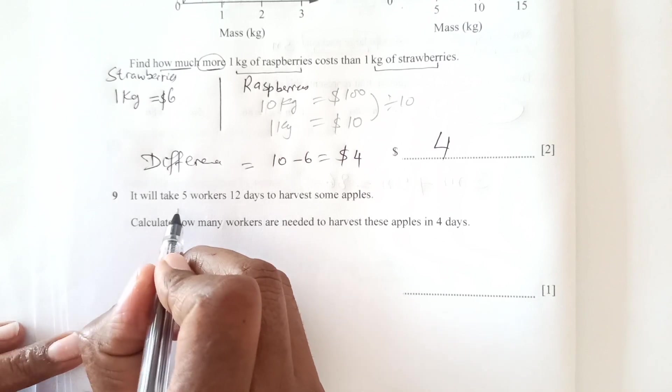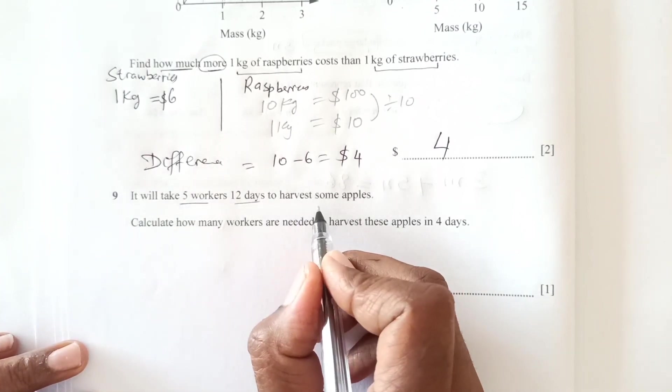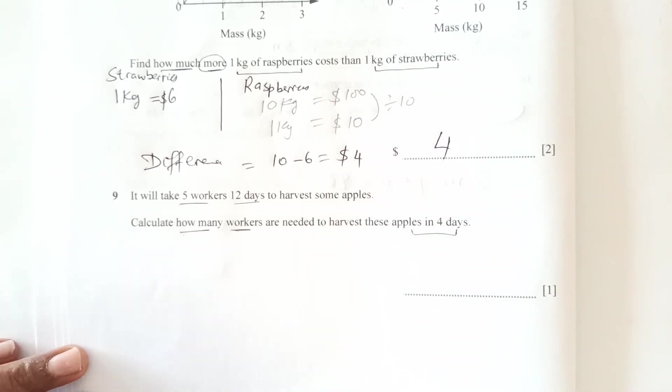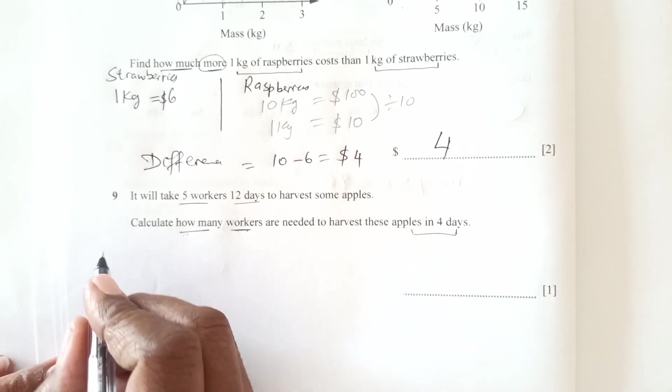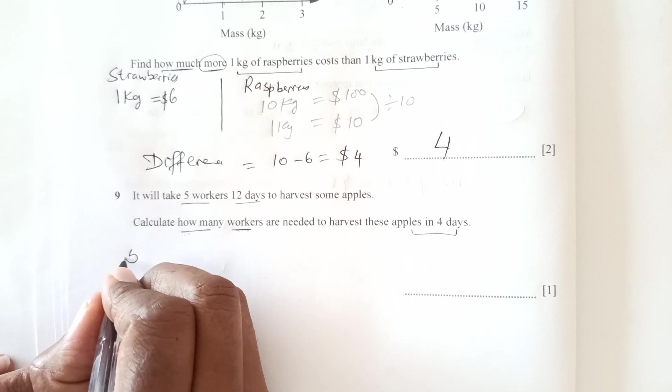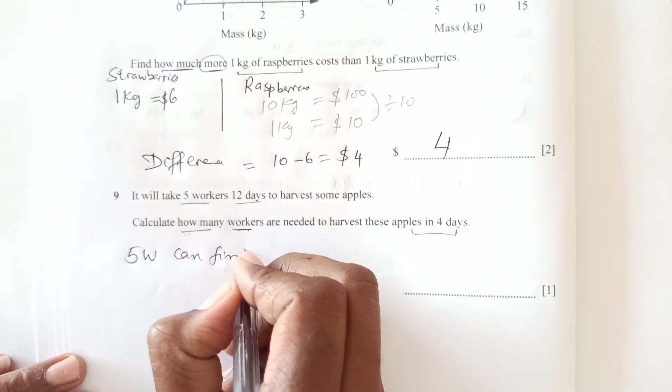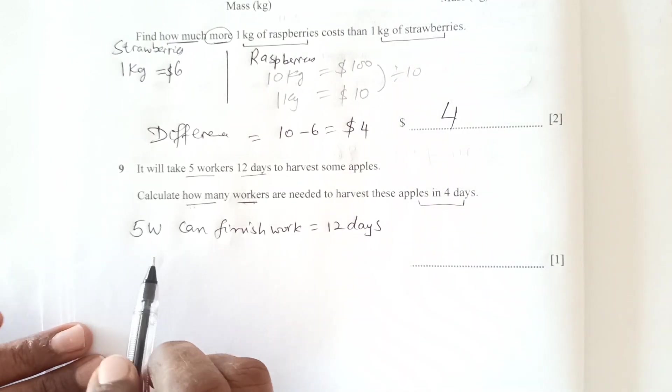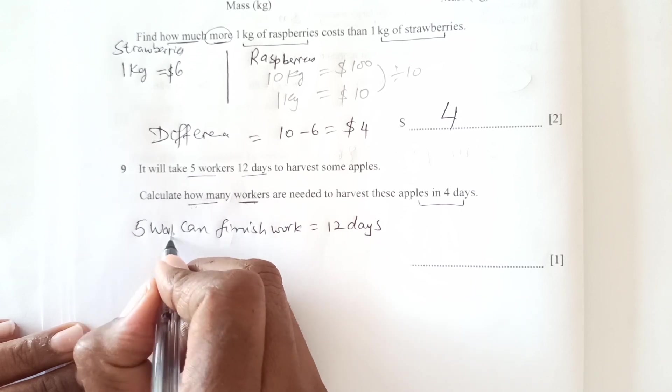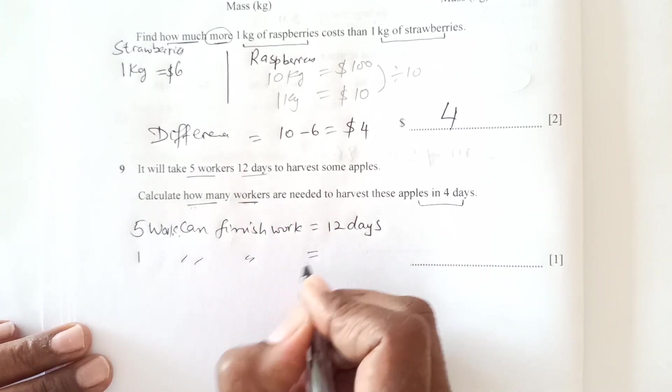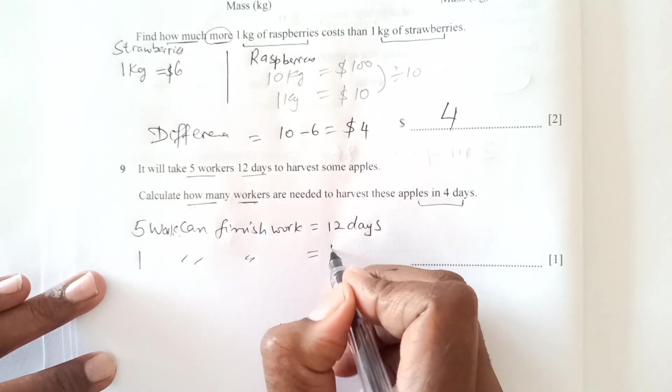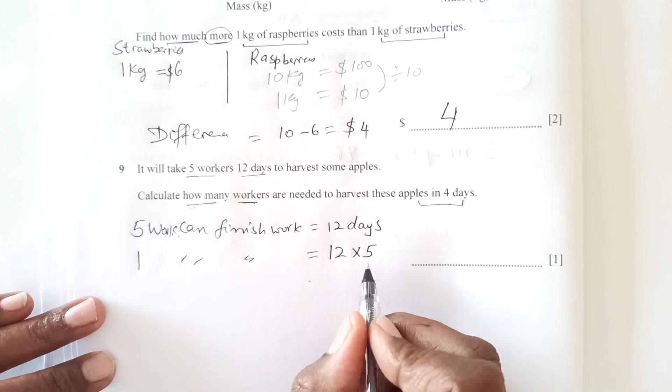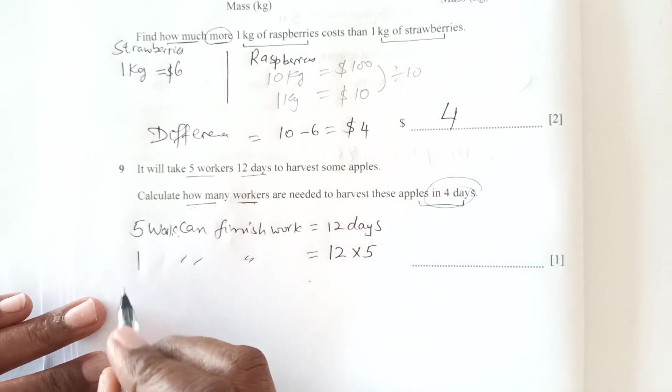Now number 9. It will take 5 workers 12 days to harvest some apples. Calculate how many workers are needed to harvest these apples in 4 days. So we are looking for number of workers. So number of workers I will write down there. So 12 days. So 5 workers can finish work in 12 days. This is practical question. You need to think guys about this carefully. 5 workers can finish work in 12 days. 1 worker, same work, 1 worker will take more days. So if we use only 1 worker 12 times 5, and that because it's getting more number of days, so we will multiply.